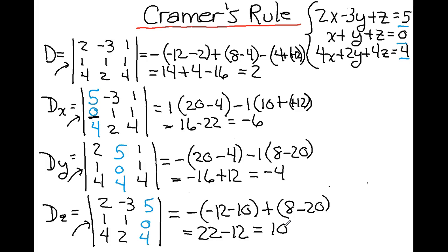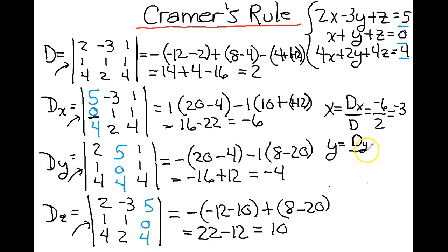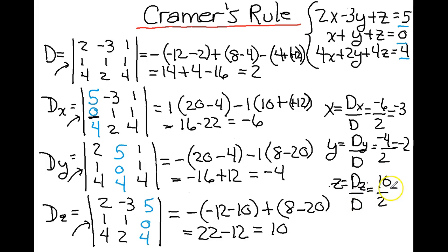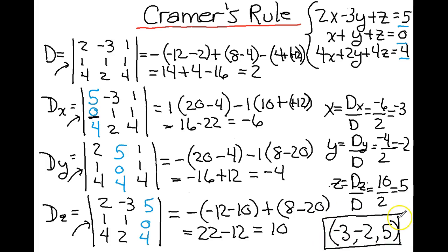Now we do the same calculations as for our 2 by 2. x equals D sub x over D, which is negative 6 over 2, giving us negative 3. y equals D sub y over D, which is negative 4 over 2, which is negative 2. And finally, z is D sub z over D, which is 10 over 2, which is 5. We write our answer as an ordered triplet, and we can check our answer by plugging it in. This is how you solve a 3 by 3 system of equations using Kramer's Rule.